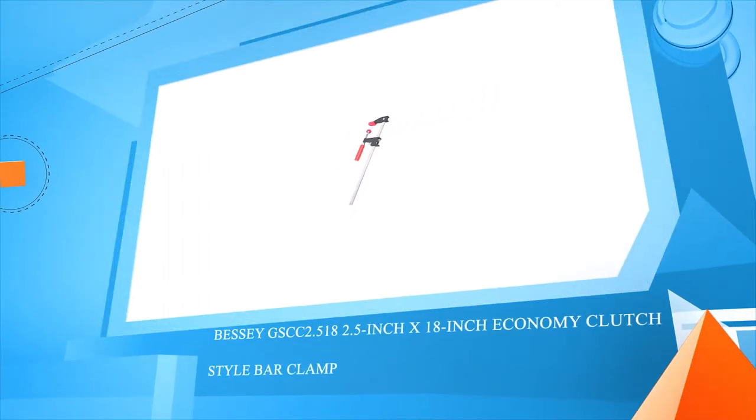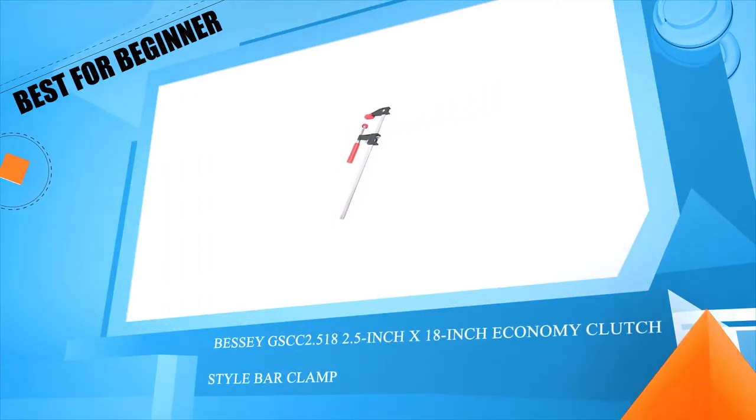Number 1: Bessie GSCC 2.518, 2.5 inch by 18 inch economy clutch style bar clamp.